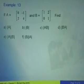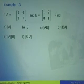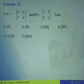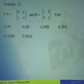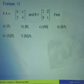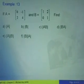Let's look at an example here, example 13. So if we are given A equals to 0, negative 1, 2, 4, and the matrix B is equals to 1, 2, 0, 1, we are asked to find the following questions.